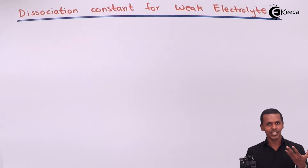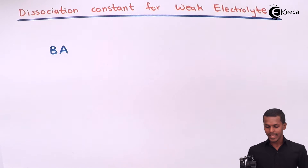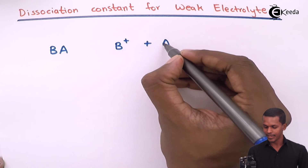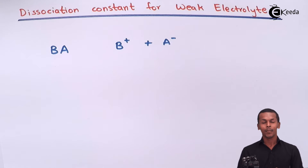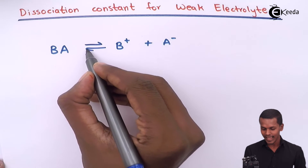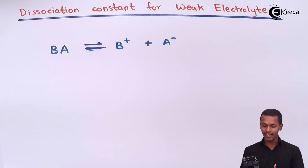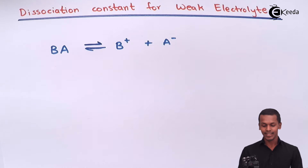For example, take a weak electrolyte BA. It undergoes dissociation into a cation B+ and an anion A−. Since it is a weak electrolyte, an equilibrium is formed between these species. We represent this with reversible arrows, showing that B+ and A− are the products and BA is the original electrolyte acting as the reactant.